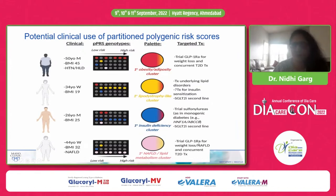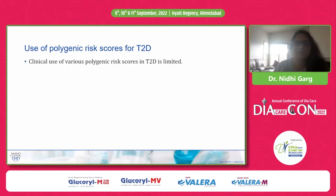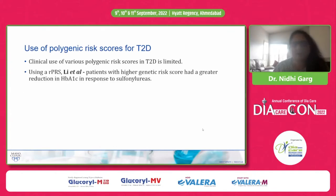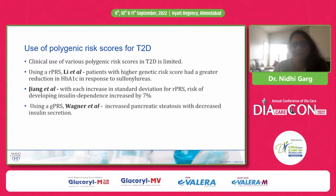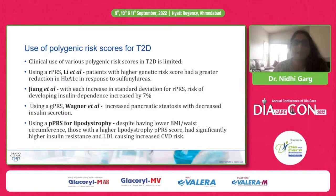The use of polygenic risk scores in clinical practice is quite limited right now, but it has been used successfully in research and clinical trials. Lee et al. showed that patients with a higher restricted polygenic risk score had greater HbA1c reduction in response to sulfonylureas. Jiang et al. similarly showed that with each standard deviation increase in score, the risk of developing insulin dependence increased by seven percent. Wagner et al., using the global PRS, showed that increased pancreatic steatosis was associated with decreased insulin secretion; and using the partition polygenic risk score for lipodystrophy, those with higher lipodystrophy scores had significantly higher insulin resistance and LDL despite lower BMI or waist circumference, causing increased CVD risk.